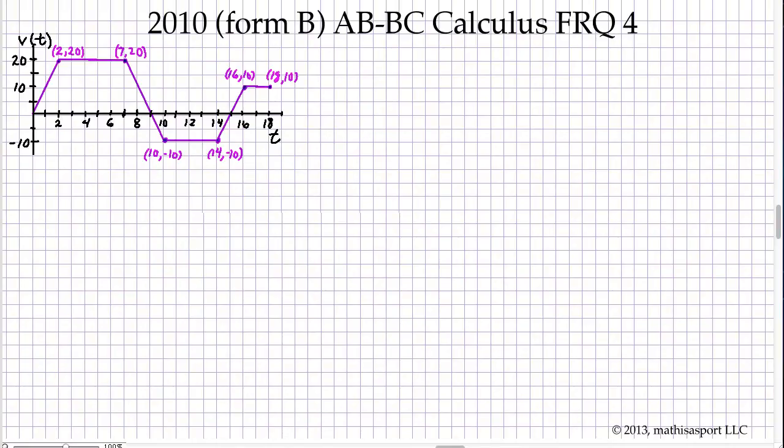The first thing we want to be aware of when we see a problem based on a graph is to make sure we understand what the horizontal and vertical axes are. In this case, we've got velocity versus time. What does that mean? That means that any question about acceleration is really a question about the slope on this graph. Questions about velocity are questions about the height of this graph and questions about position are about the change in signed area on this graph.